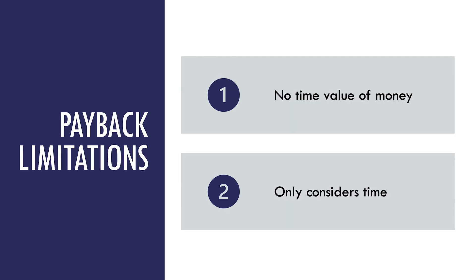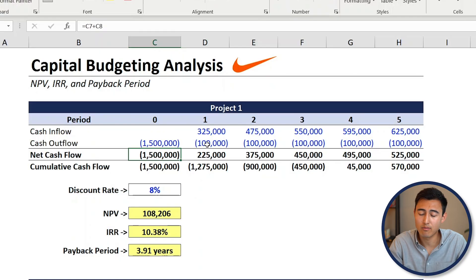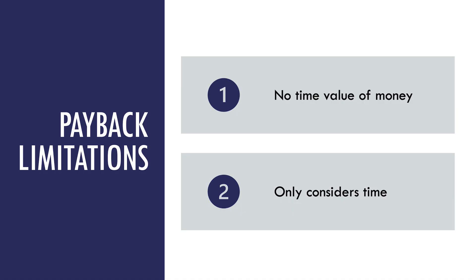One of the main limitations of the payback period is that it doesn't account for the time value of money. To combat this, there is the discounted payback period, where you first discount all of the net cash flows, then calculate the cumulative cash flow to derive a discounted payback period. Also, this method doesn't consider any profits or returns — it's only focused on paying back the initial project investment.